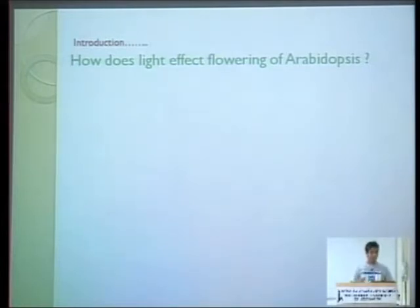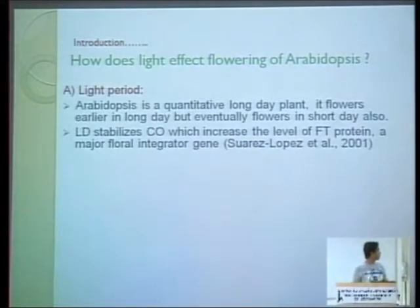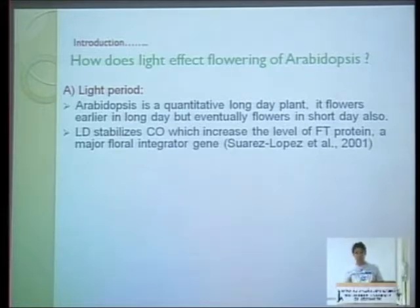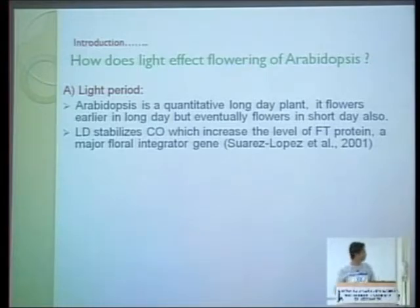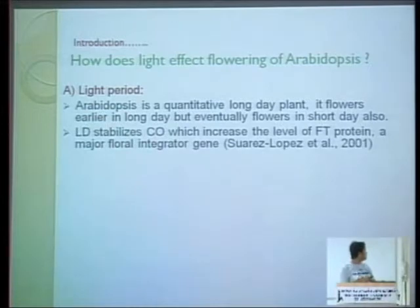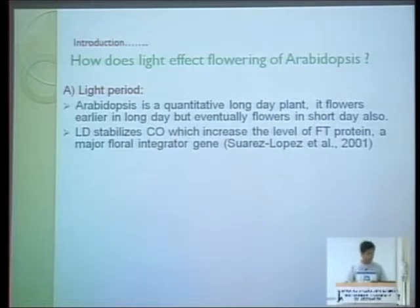How does light affect flowering? There are two parameters: the light period and the light quality. All plants are exposed to light — some need longer periods and some need shorter periods. Arabidopsis is a facultative long-day plant, meaning it flowers earlier in long days but eventually flowers in short days too, just taking longer. In long days, the CONSTANS protein is stabilized, and its immediate target is the FT protein, the major flowering protein in Arabidopsis.